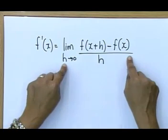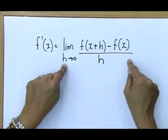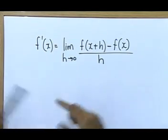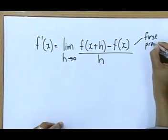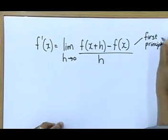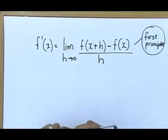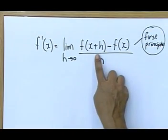You write down this formula when you only write down this formula, grade 12s, if you see the word first principle. That is when you must find the derivative. When you see the word first principle, you write down this.